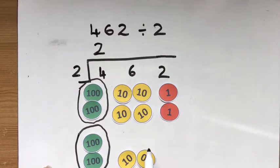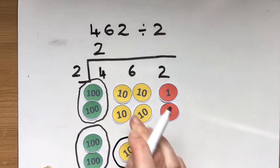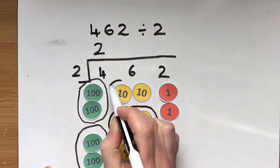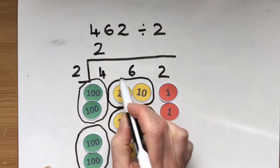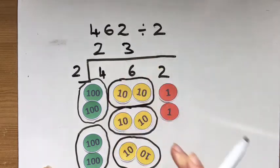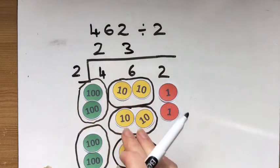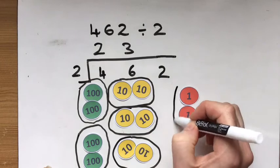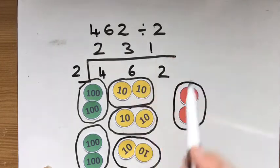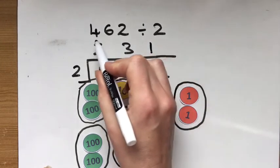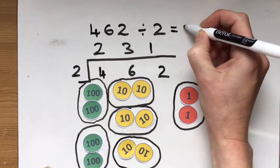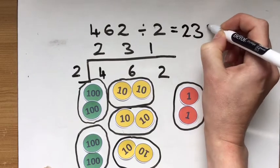Then let's look for the tens. I've got a group of two, another group of two, and a third group of two, or three lots of 20. And at the end here, I've just got one group of two. So 462 divided by two is 231.